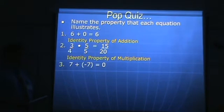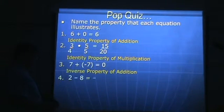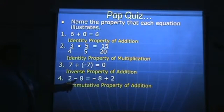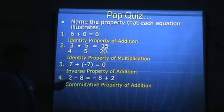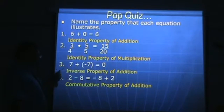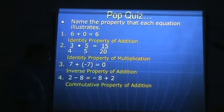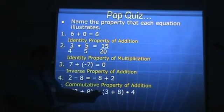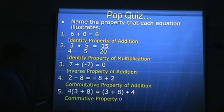Seven plus negative seven equals zero: that would be the inverse property of addition. This one's a little tricky: two minus eight equals negative eight plus two. That is the commutative property of addition. This can be changed to addition by keeping the sign with each number, making it two plus negative eight. Changing the order makes it commutative — two minus eight gives negative six, and negative eight plus two also gives negative six. Finally, four times the quantity three plus eight equals the quantity three plus eight times four — that is the commutative property.